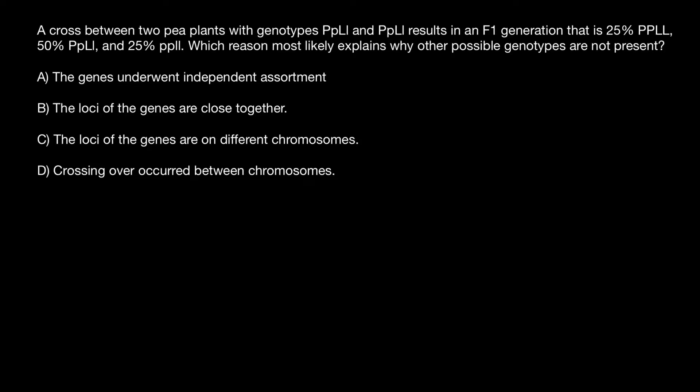A cross between two P plants with genotypes as follows results in an F1 generation that is 25% genotype homozygous dominant for both genes, 50% which is heterozygous for both genes, and 25% which is homozygous recessive for both genes. Which reason most likely explains why other possible genotypes are not present?